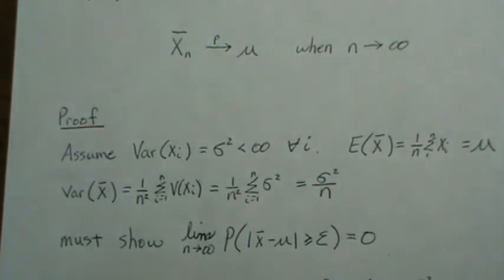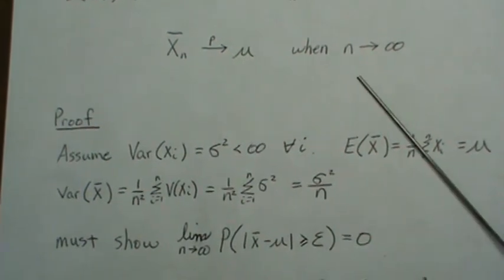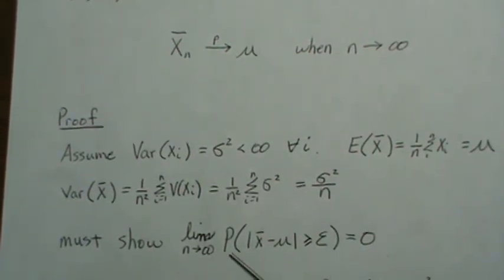To show convergence in probability, which is what we want to show as N goes to infinity, we must show this. And this says that as the sample size gets large, the probability that we're outside a region of epsilon from mu is zero. It means we're getting really close to mu, and the probability that we're a small distance away is zero.